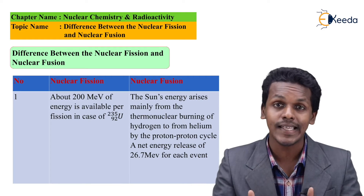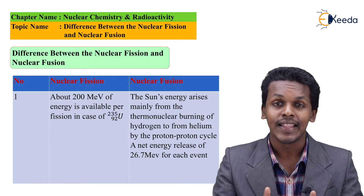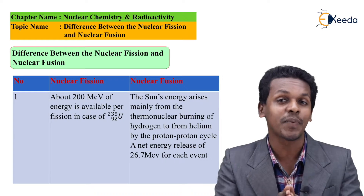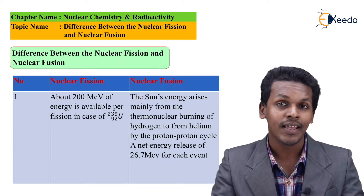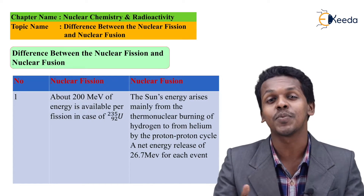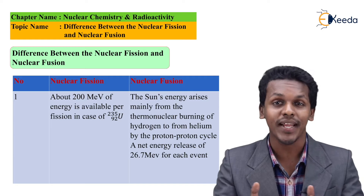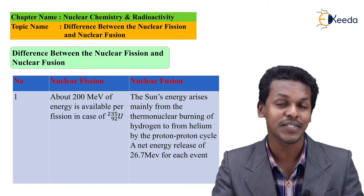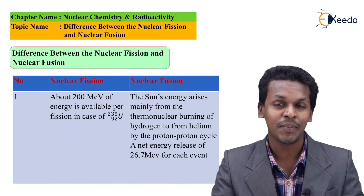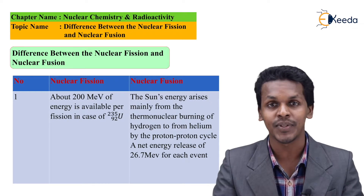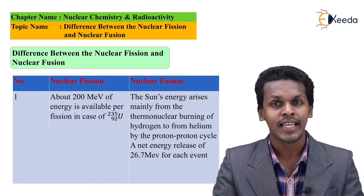So these are the two reactions which produce energy. But what is the difference? The difference is that energy is being produced because of the splitting of a nucleus in fission, and the energy is produced because of combining of the nucleus in fusion. Now let me talk about another difference between these two.